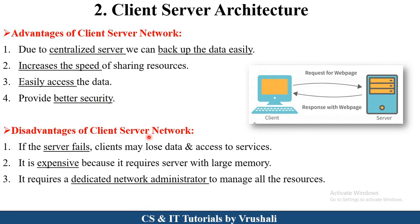The disadvantages of client-server network: sometimes we hear news like 'WhatsApp server is down' or 'Facebook server is down.' When the WhatsApp server is down, we can't exchange information, can't send messages, and can't use WhatsApp functionality. If the server fails, clients may lose data and can't access services. Client-server architecture is also expensive compared to peer-to-peer because it requires a centralized server with large memory for storing information. Additionally, a skilled network administrator is required to manage all resources and communication.